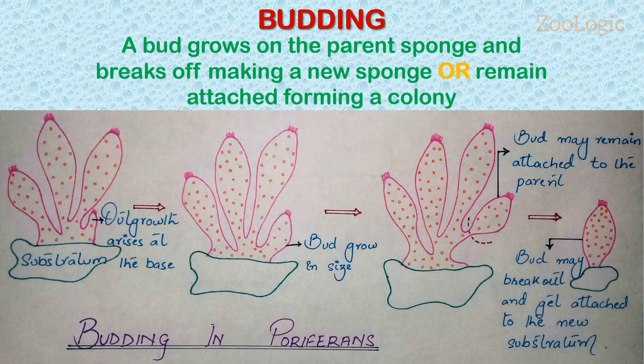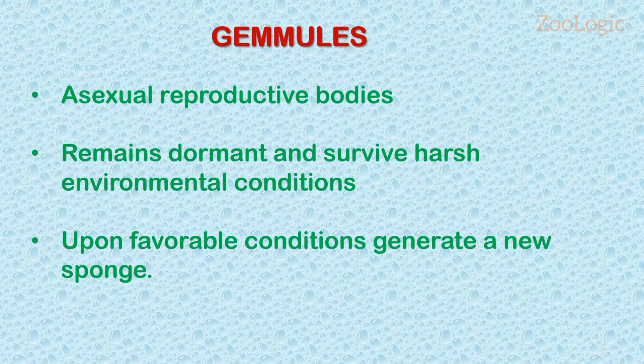Sponges also reproduce asexually by the formation of gemmules. Gemmules are environmentally resistant structures, meaning they survive hostile conditions such as changes in temperature and desiccation, and remain dormant for long periods. Upon favorable conditions, they settle down, attach themselves to a substratum, and generate a new sponge.